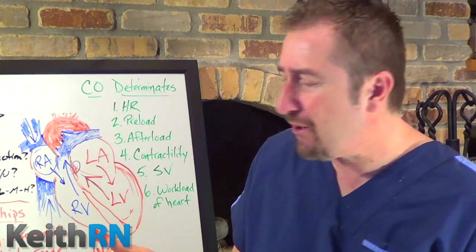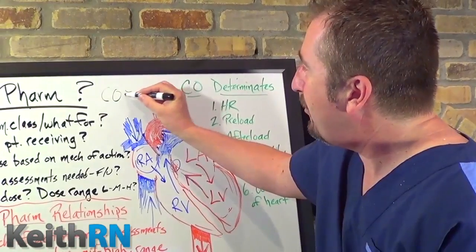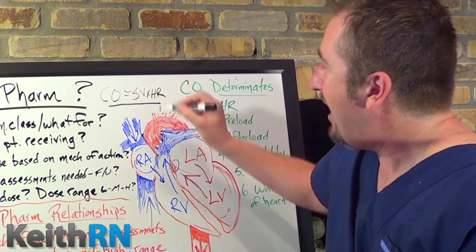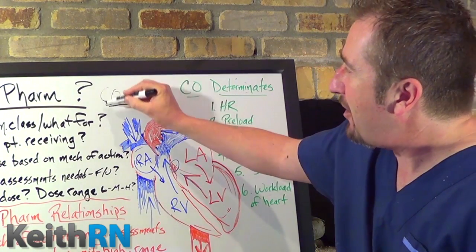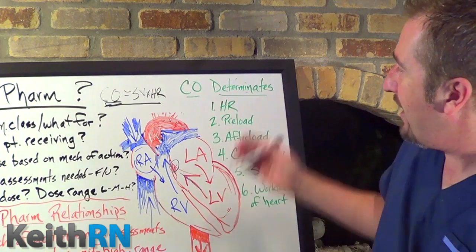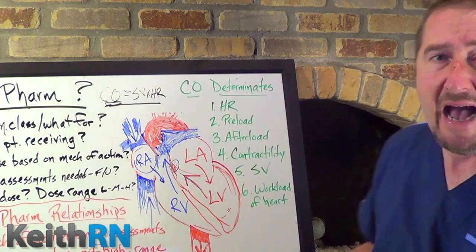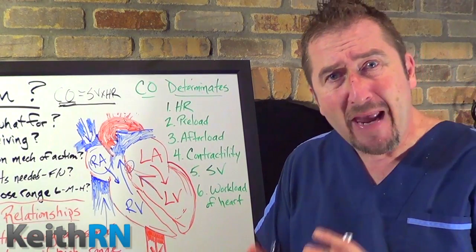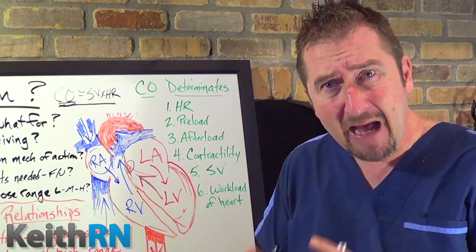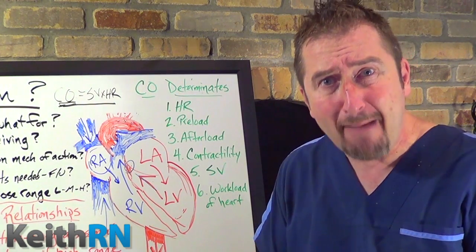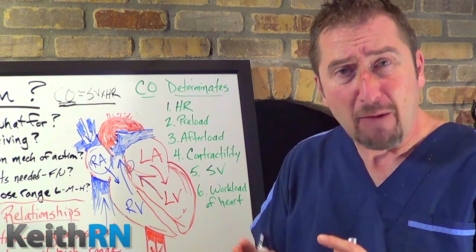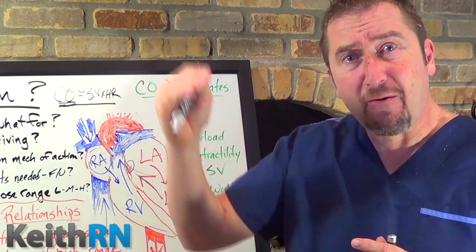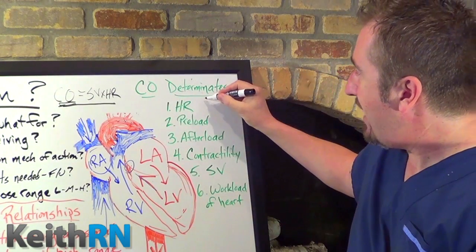Let's go to the second principle — the determinants of cardiac output. Cardiac output equals stroke volume times heart rate. How does a beta blocker affect heart rate? When we understand that a beta blocker is blocking sympathetic receptors on the heart, we're going to get the opposite effect: instead of increasing heart rate, we're going to see heart rate decreased.